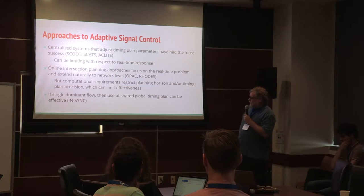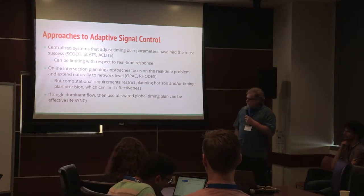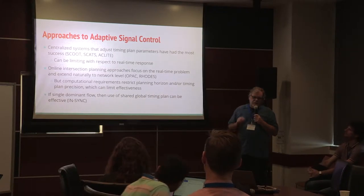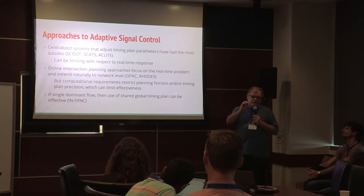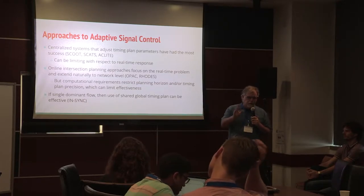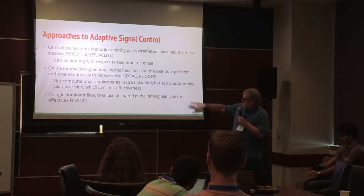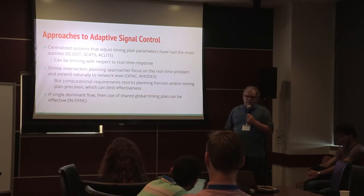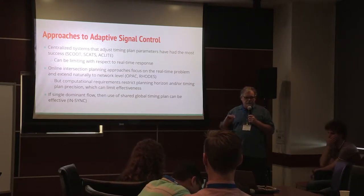A third type, at least in the US, is a system called InSync. The idea is somewhere in the middle: if you know the dominant flow — say on a suburban corridor — these systems build a shared global timing plan for the main flow, then use an adaptive system to manage the rest of the traffic.